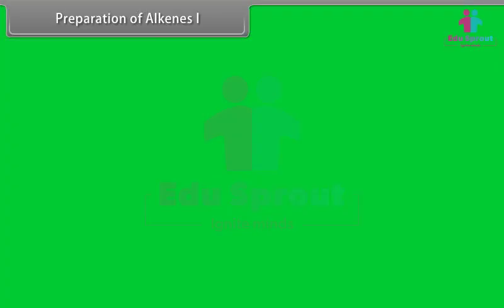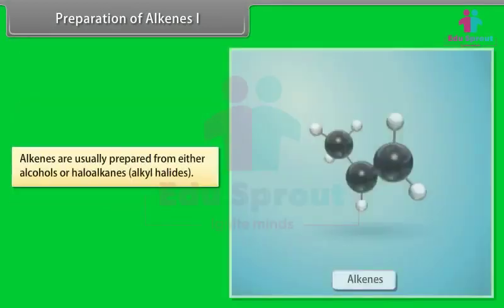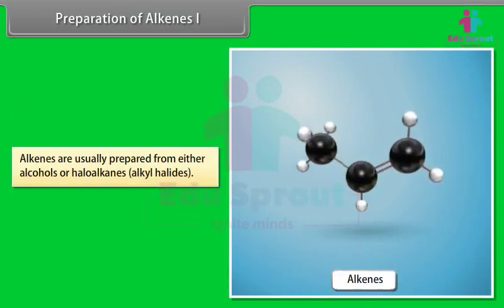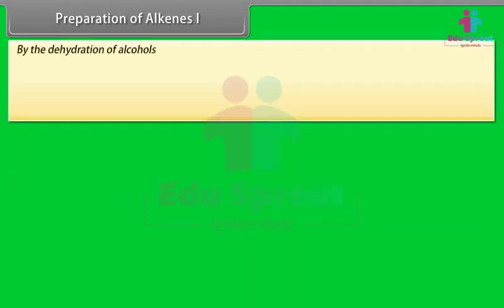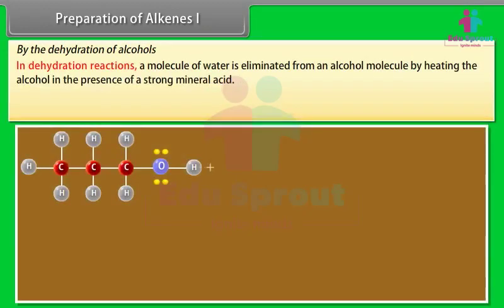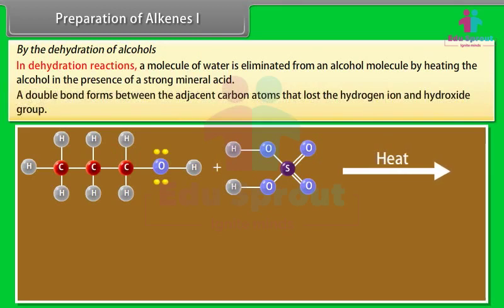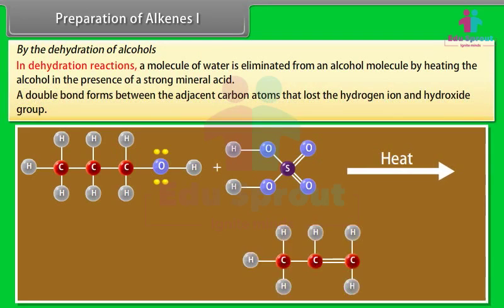Preparation of Alkenes: Alkenes are generally prepared through beta-elimination reactions in which two atoms on adjacent carbon atoms are removed, resulting in the formation of a double bond. Alkenes are usually prepared from either alcohols or haloalkanes. By dehydration of alcohols: a molecule of water is eliminated from an alcohol molecule by heating in the presence of a strong mineral acid. A double bond forms between the adjacent carbon atoms that lost the hydrogen ion and hydroxide group.